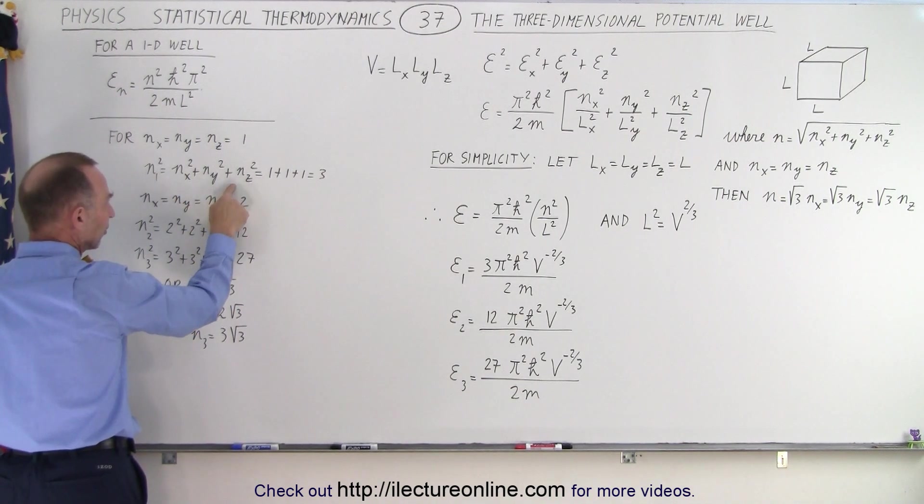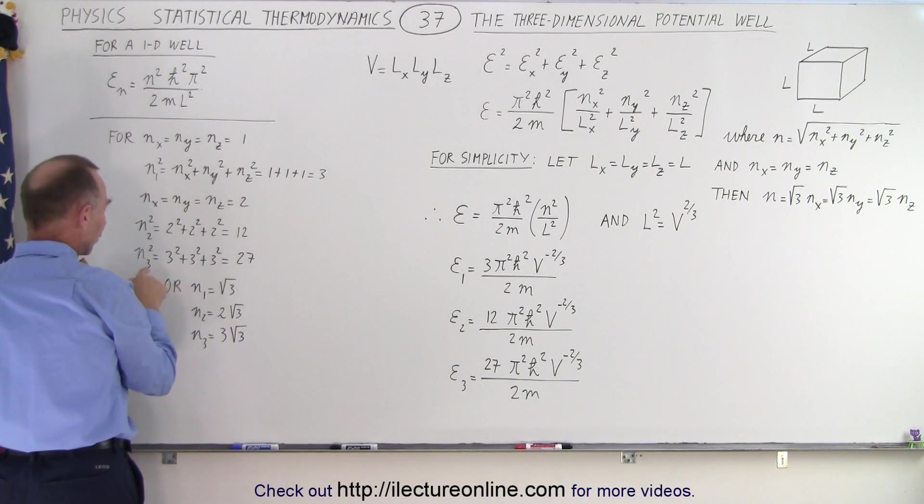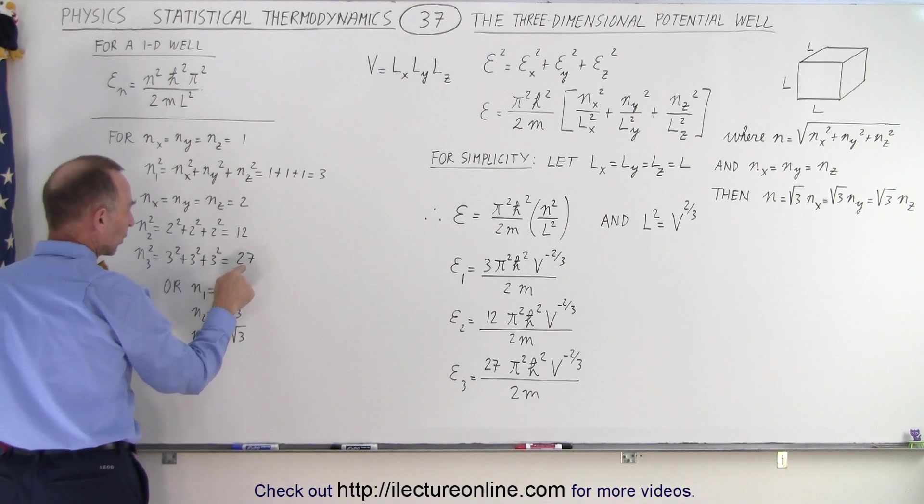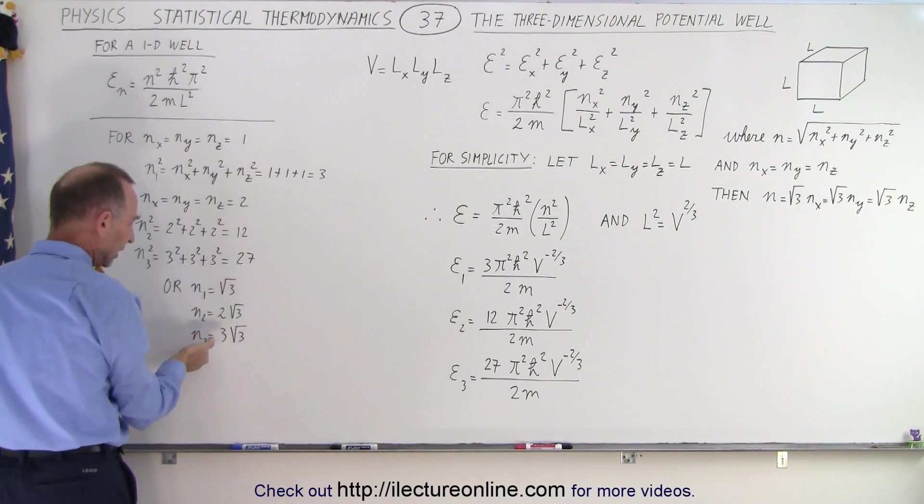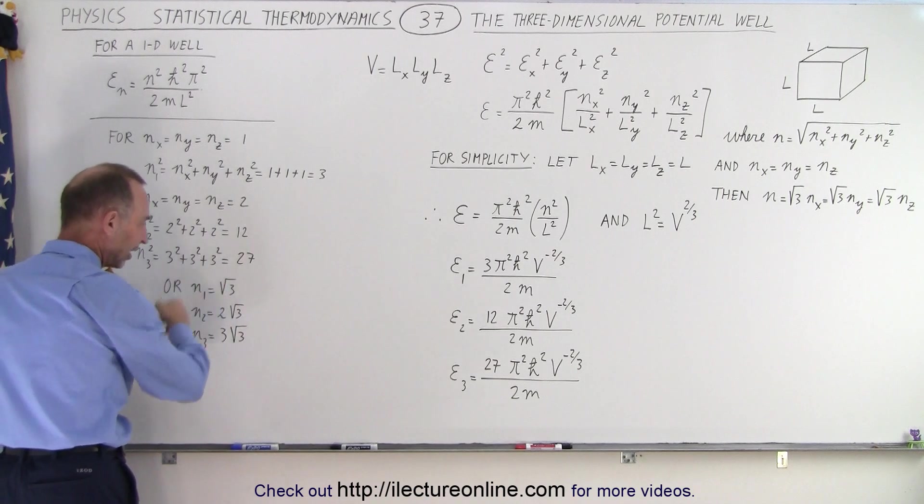And for n equals three, when n sub x, n sub y, and n sub z all equal to three, then of course n sub three squared will be three squared plus three squared plus three squared, or twenty-seven. Of course, we then take the square root to find n sub one, n sub two, and n sub three expressed like this.